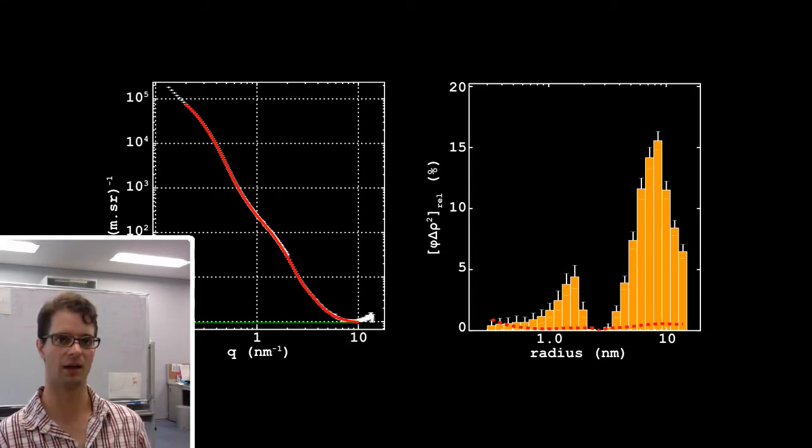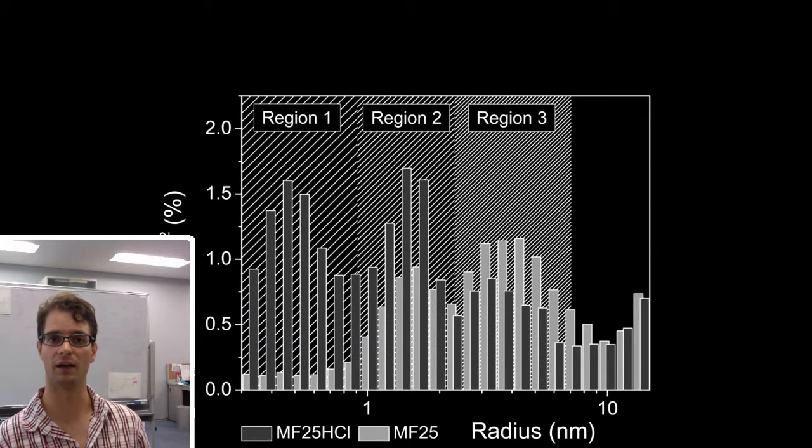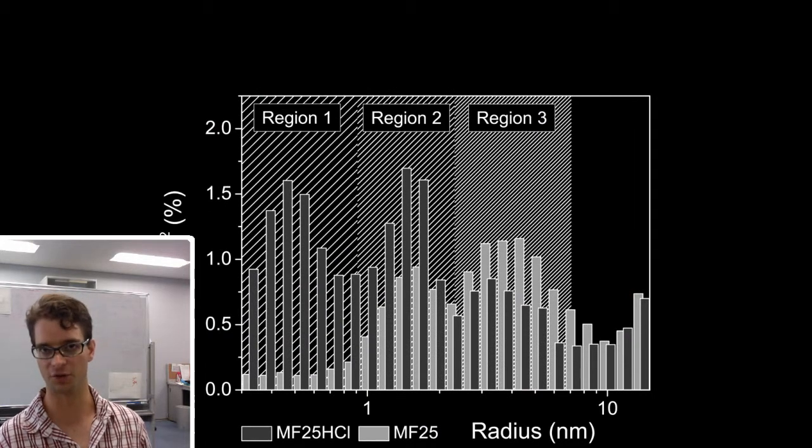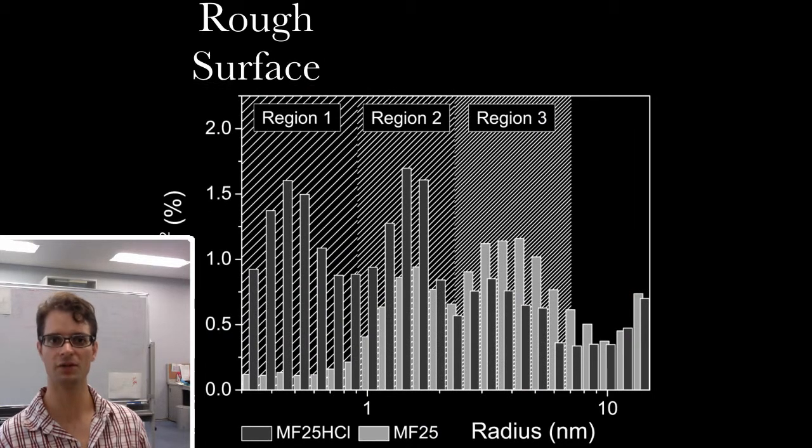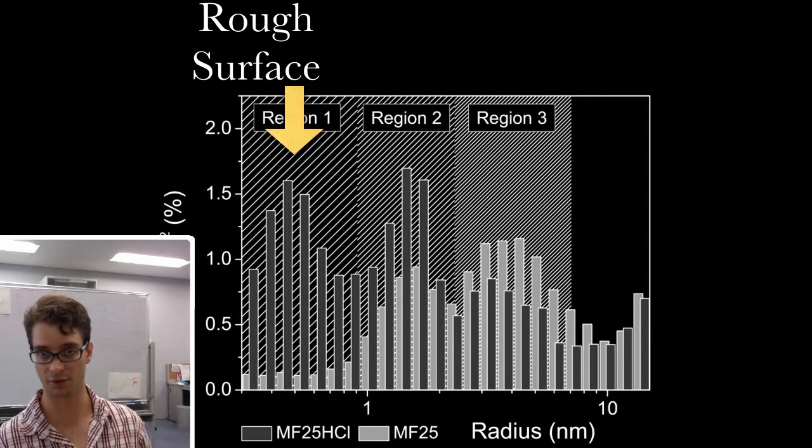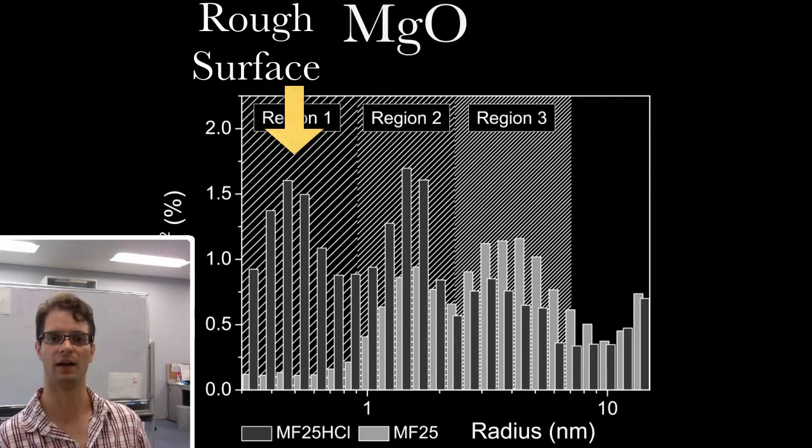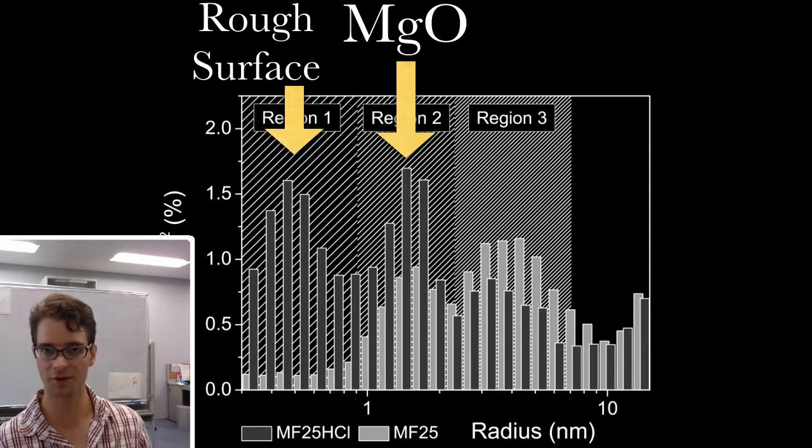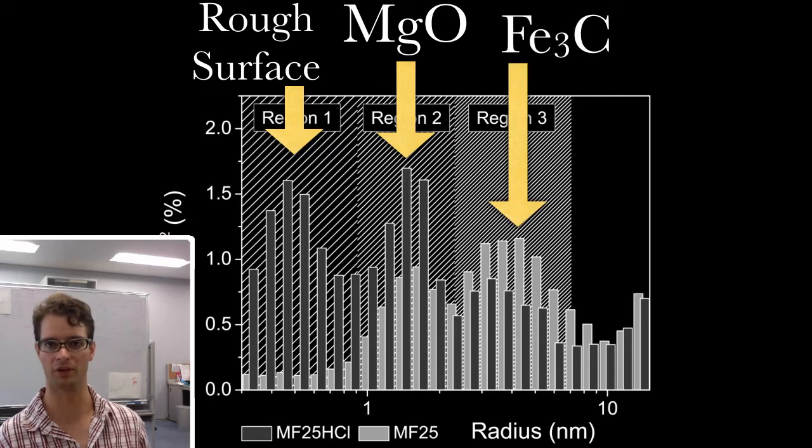So with that information, after a couple of months of thinking about this, we could identify in the size distributions that we found regions which we could relate to rough surface contributions, scattering from rough surface contributions, scattering from magnesium oxide particles, and scattering from iron carbide particles.